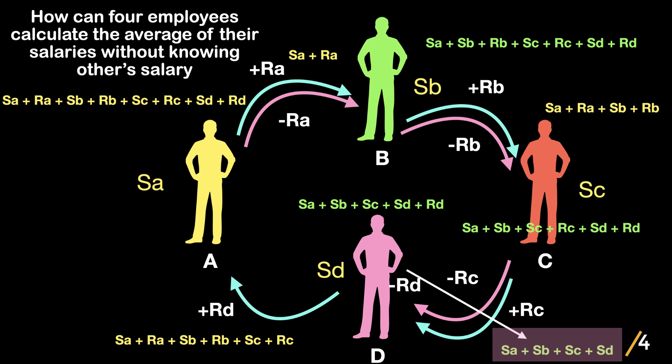By following these simple steps, we can find the average of four employee salaries without knowing others' salary. We can apply the same technique to know the average of more than four people as well. We just need to remember that at every stage only two people should share the figures and the rest should not be communicated.